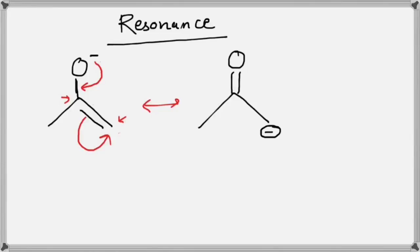What we learn here is that the negative charge will move to form a double bond. The negative charge created a double bond here, and the double bond present to the adjacent carbon will then break and transfer the charge to the further atom. If you verify, the net charge on the left resonance structure is negative one, and the net charge on the right structure is also negative one.